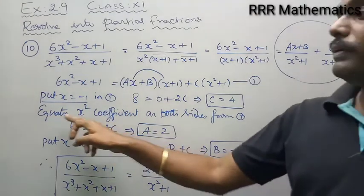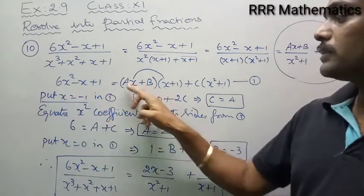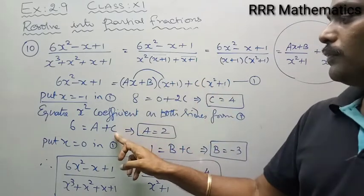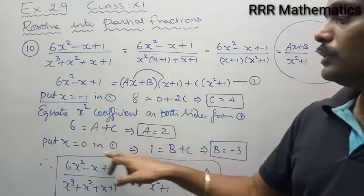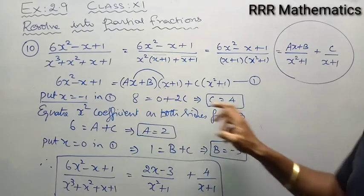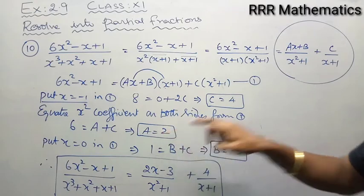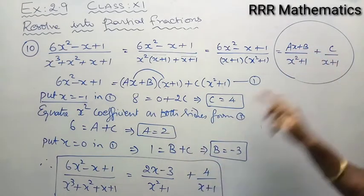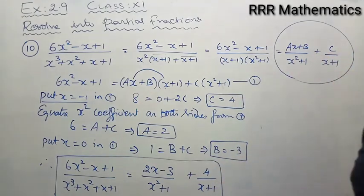For a and b: equating x² coefficients — on the left side 6, on the right side a from ax² and c from cx² — replacing c = 4 gives a = 2. Then putting x = 0 in equation 1 gives b = -3. After getting a = 2, b = -3, c = 4, substitute back: the given fraction equals (2x-3)/(x²+1) + 4/(x+1).